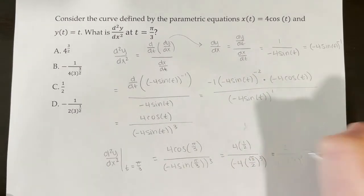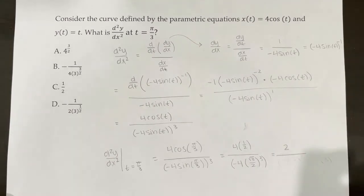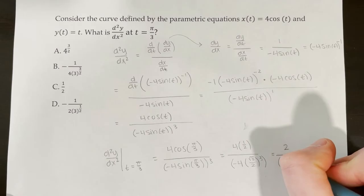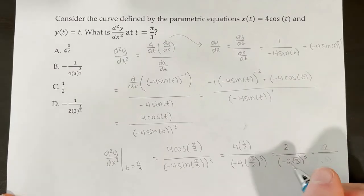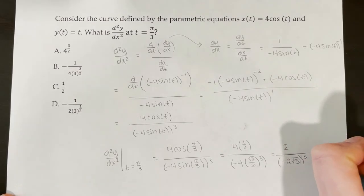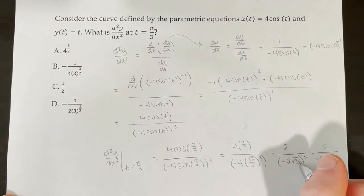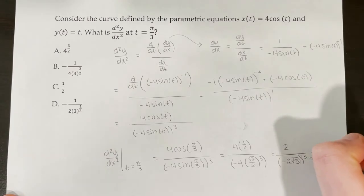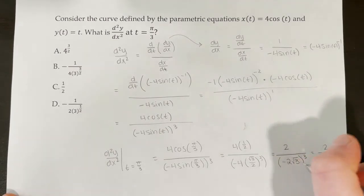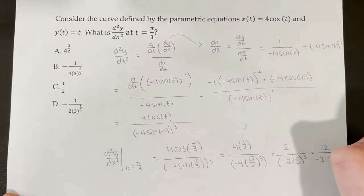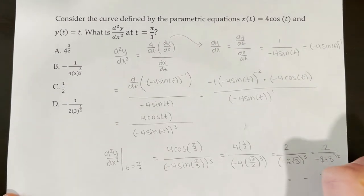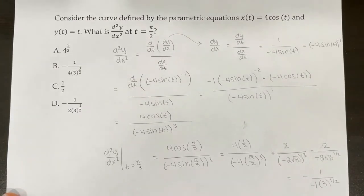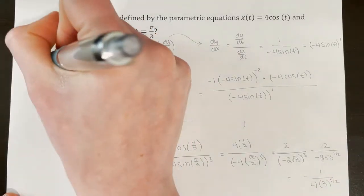Continuing the cleanup: 4 times 1/2 in the numerator gives 2. In the denominator, negative 4 times root 3 over 2 gives negative 2 root 3, and that's still all cubed, giving negative 8 times root 3 cubed. Since root 3 cubed equals 3 to the power of 3/2, we get 2 over negative 8 times 3 to the 3/2, which simplifies to negative 1 over 4 times 3 to the 3/2. That's our second derivative at t equals pi over 3, matching answer choice B.